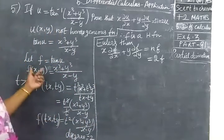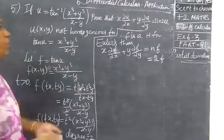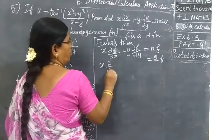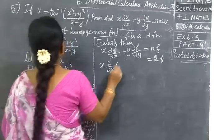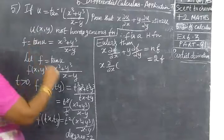But F is the same, we can define it. The question is U. So now we can replace F. So X into partial by partial X of tan U.